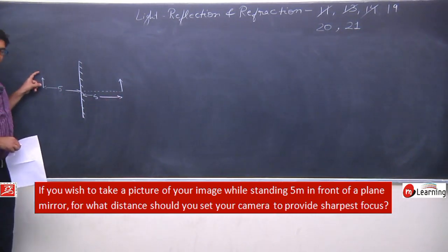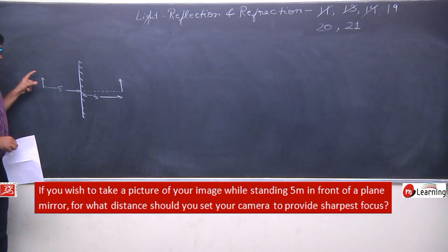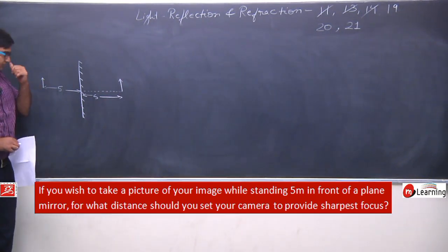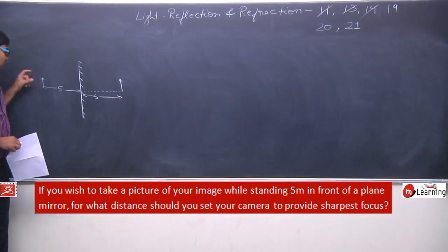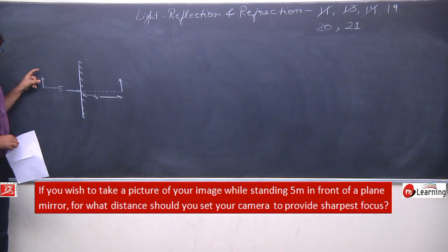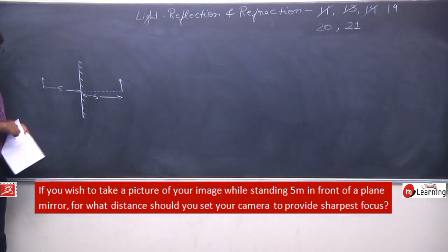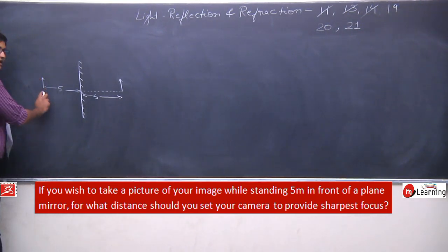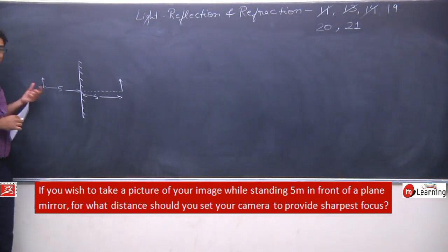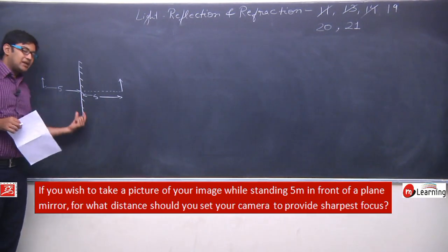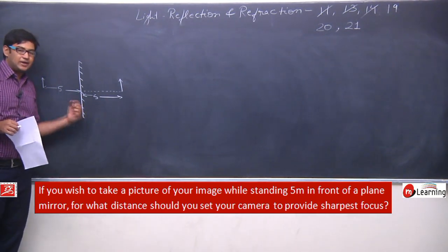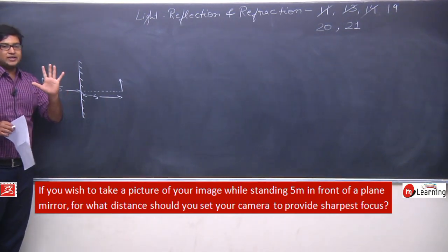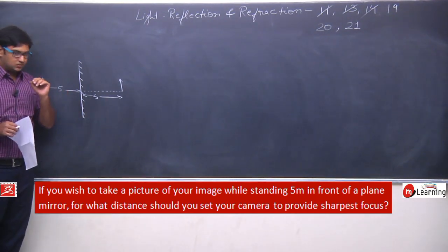You want to take a photo of your image from here — like a selfie. So the camera you are holding is also at exactly this position, meaning the camera is also 5 centimeters from the mirror. So the image is behind the mirror at 5 centimeters distance.